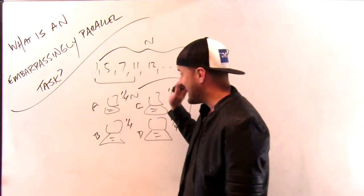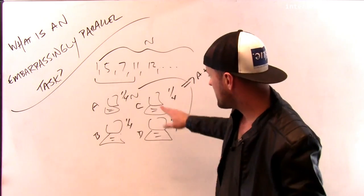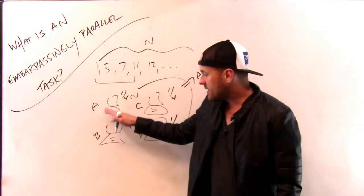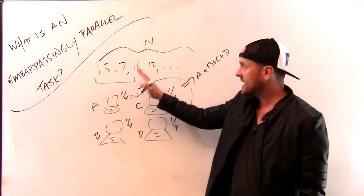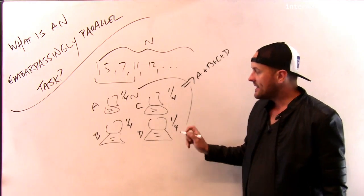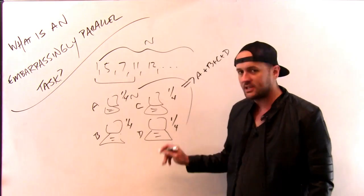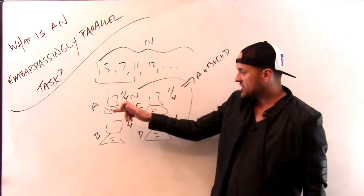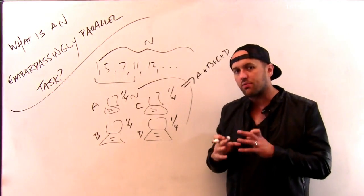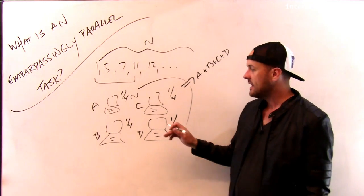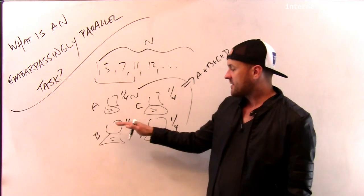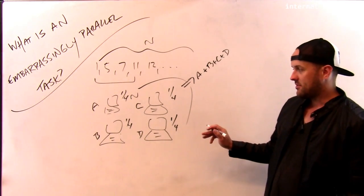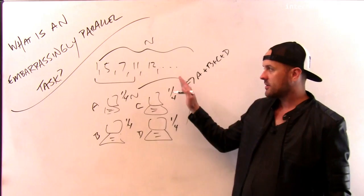Now, what constitutes a problem that cannot be broken up? One of the really important characteristics of this problem is that while these machines are computing their subtasks, if I give machine A a quarter of the numbers, it doesn't have to communicate with machine B, C, or D while it's doing that at all. And that's really important, because once I split this task up, if these machines need to talk to each other a lot, that communication is pretty slow compared with local computation that they're doing, and that will slow down the process quite a bit. All this machine has to do is add up its numbers and then return the result.